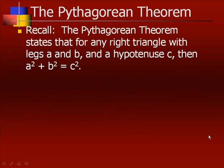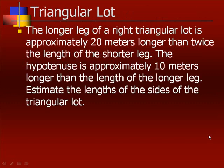Now the next example is on the Pythagorean theorem, which states that for any right triangle with legs A and B and a hypotenuse C, then A squared plus B squared equals C squared. The longer leg of a right triangular lot is approximately 20 meters longer than twice the length of the shorter leg. The hypotenuse is approximately 10 meters longer than the length of the longer leg. Estimate the length of the sides of the triangular lot.